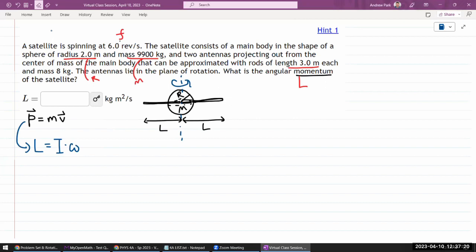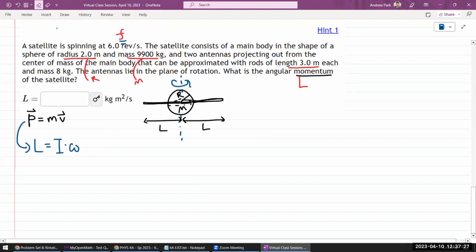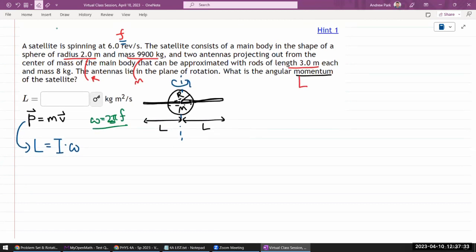You do have to be a little bit careful here. They are giving us the frequency, not angular velocity. So you have to have this relationship in the back of your mind: that angular velocity is related to the frequency through this relationship. This 2π basically converts revolutions into radians.